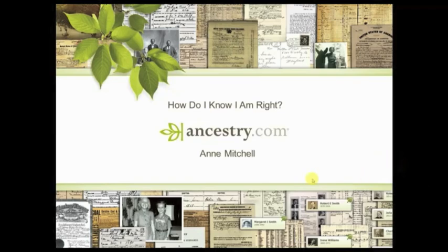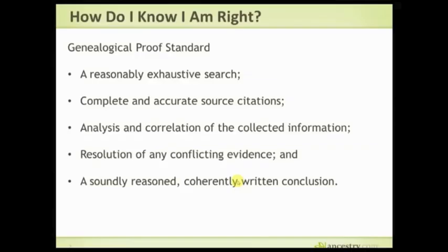So in genealogy we have something called the Genealogical Proof Standard. It sounds really formal, but it's something that anyone can do. It has five components. First: a reasonably exhaustive search, which means you have to look through all the data — it's not enough just to have one document, you really need more than one.